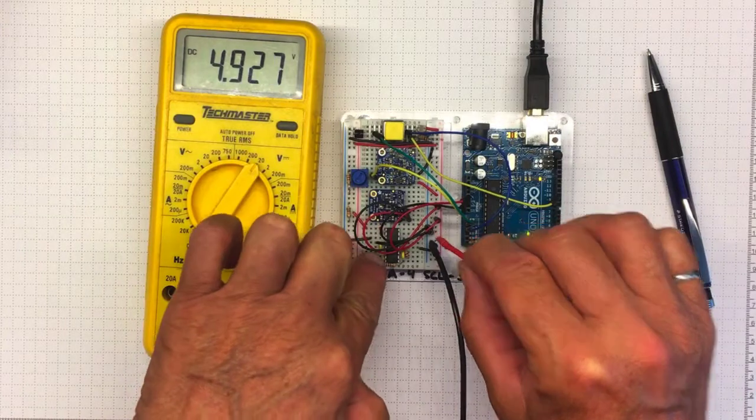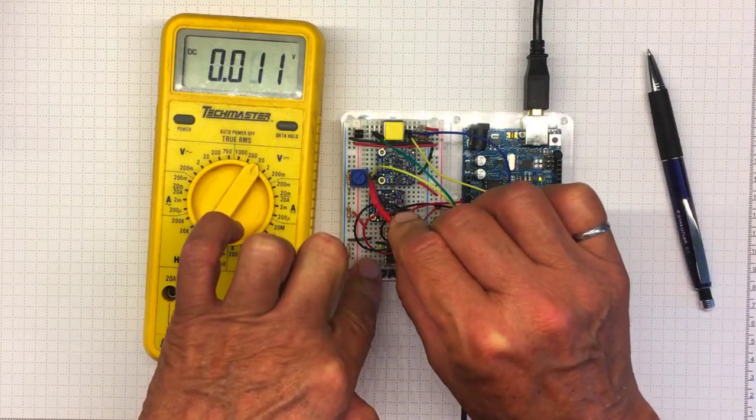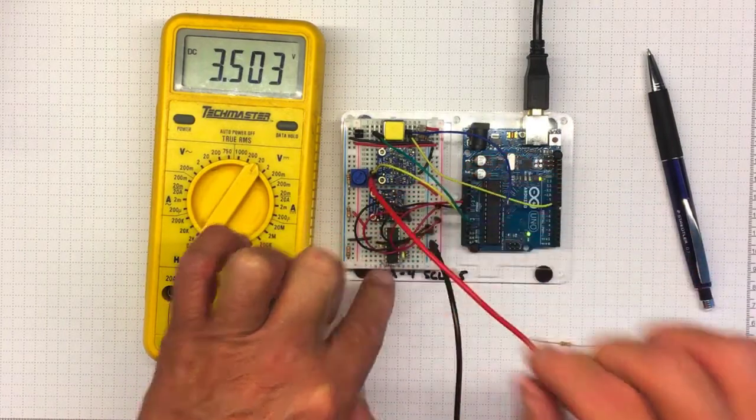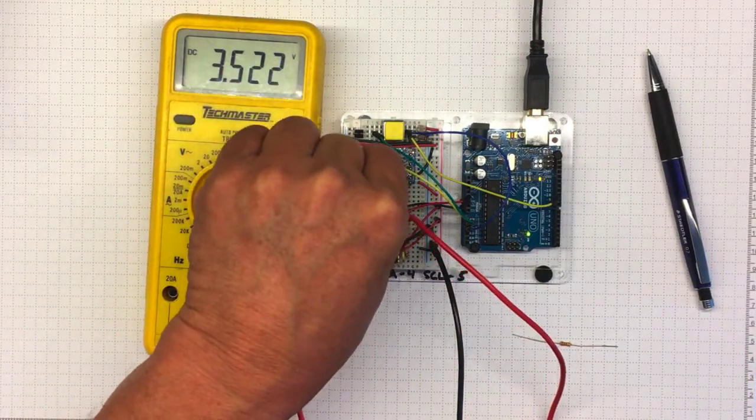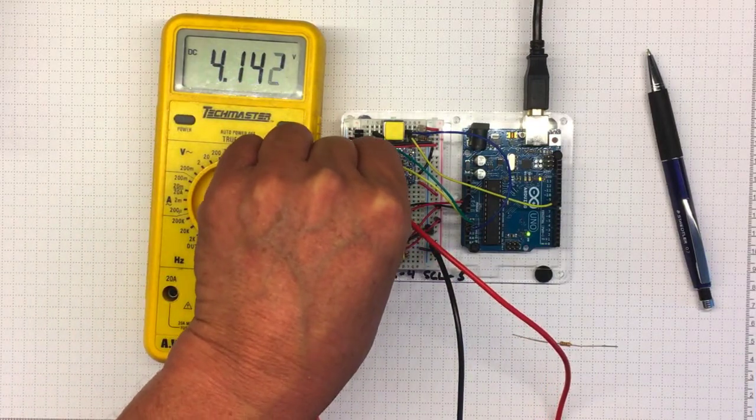If I go and measure the output from my potentiometer here, I've got 3.5 volts and I can change that back and forth.